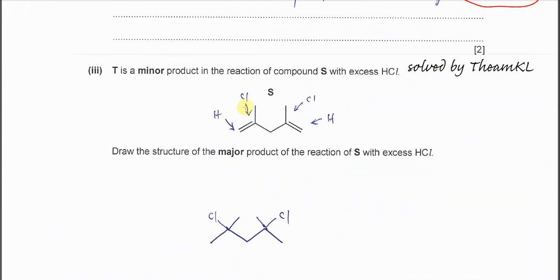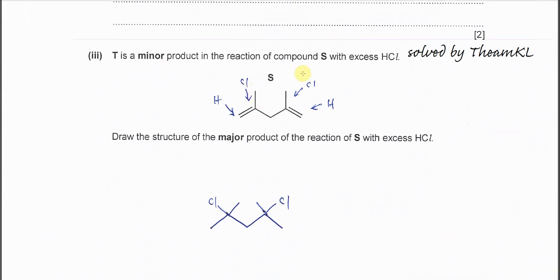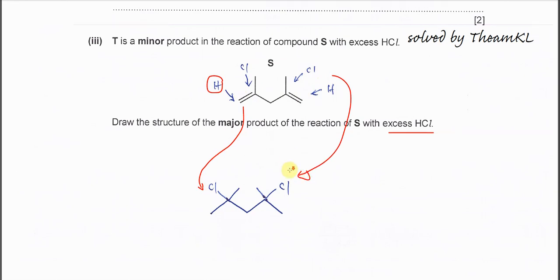T is the minor product in the reaction of compound S with excess HCl. Draw the structure of the major product. When S reacts with HCl, just follow Markovnikov's rule. Hydrogen will add to the carbon with more hydrogen. This is CH2, this is CH with another group. So hydrogens will bond here, and the chlorine will bond to another carbon. It will form this part. Hydrogens will bond to this carbon and chlorine will bond to this carbon. So it will form this major product.